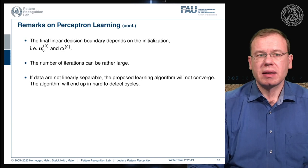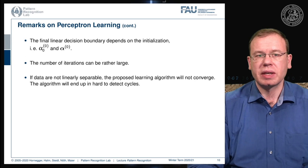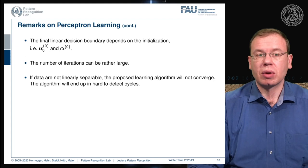The final decision boundary is linear and depends on the initialization: different choices of α₀ and α at the initial step lead to different convergence results and different decision boundaries. The number of iterations can also be rather large. If the data are not linearly separable, the algorithm will not converge, resulting in cycles that may be hard to detect.